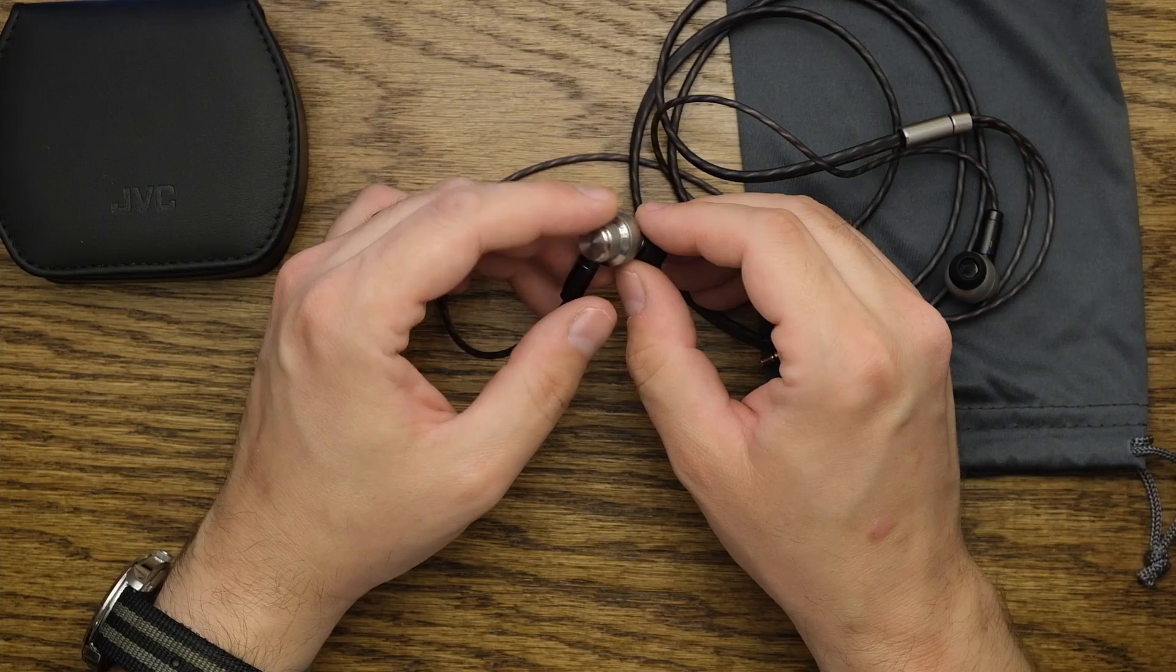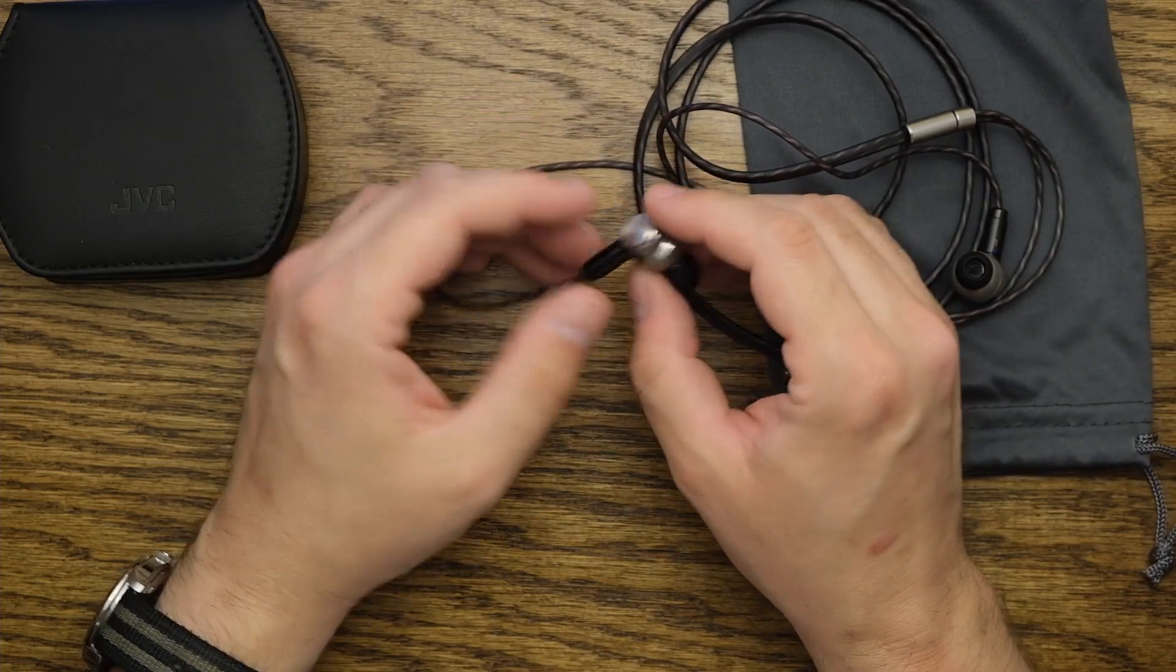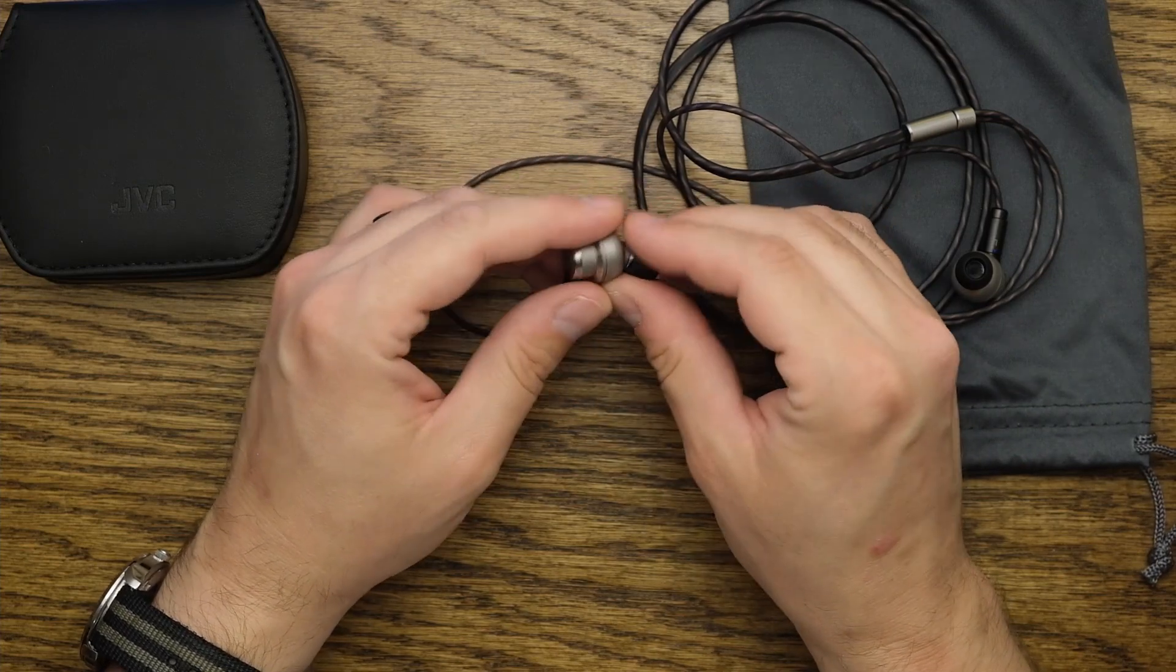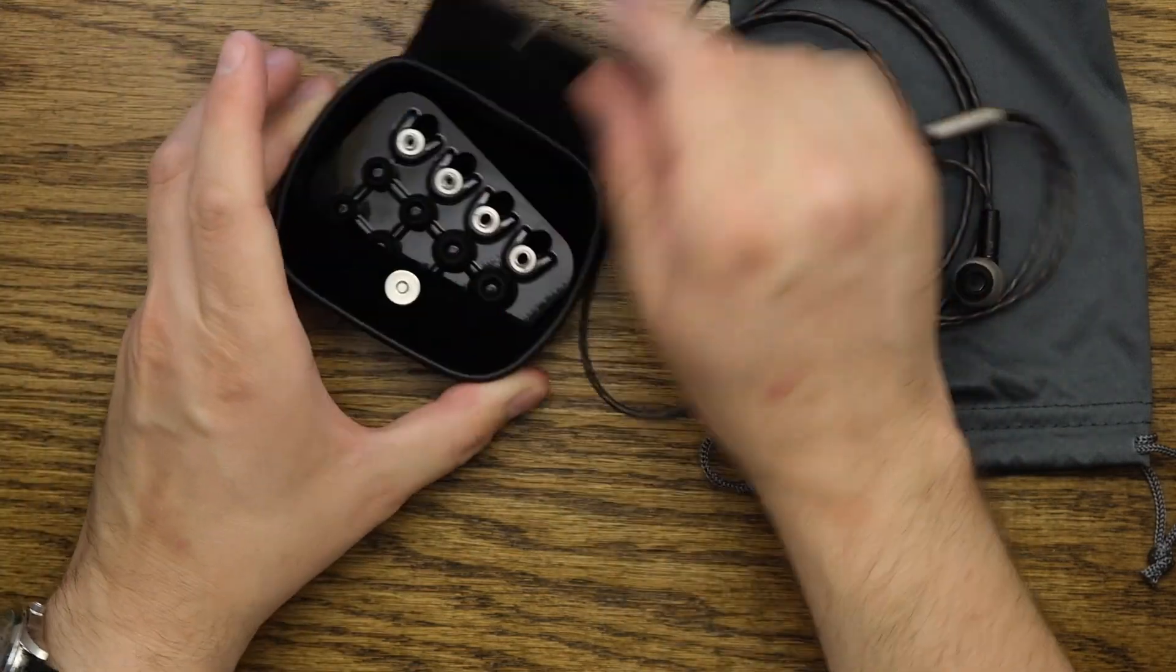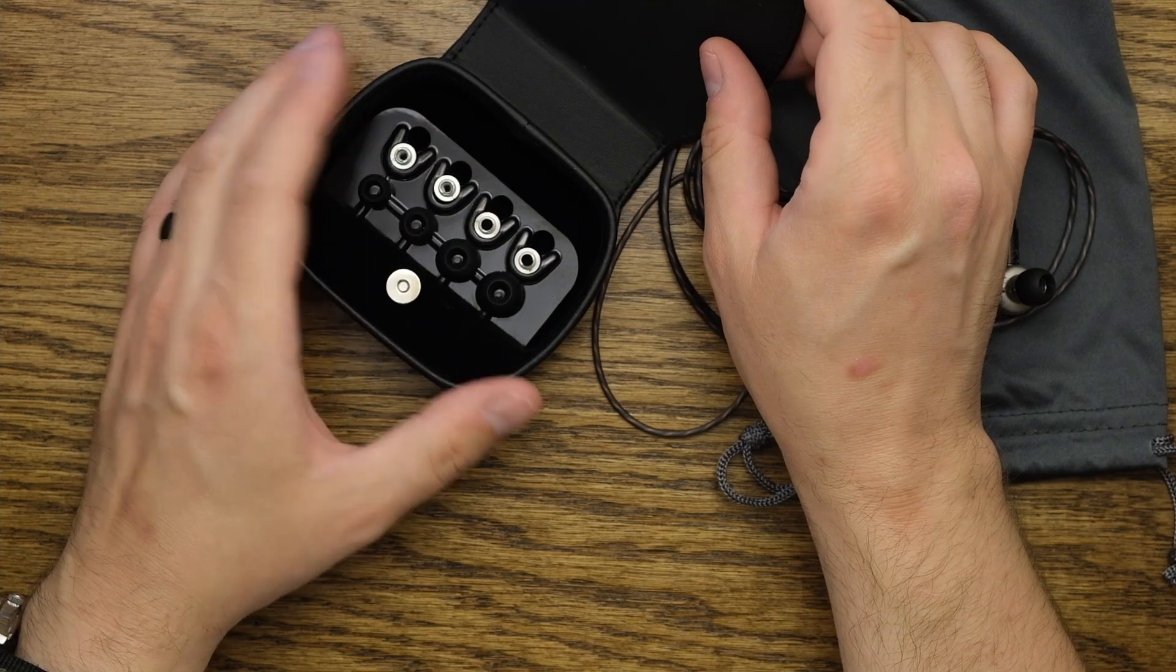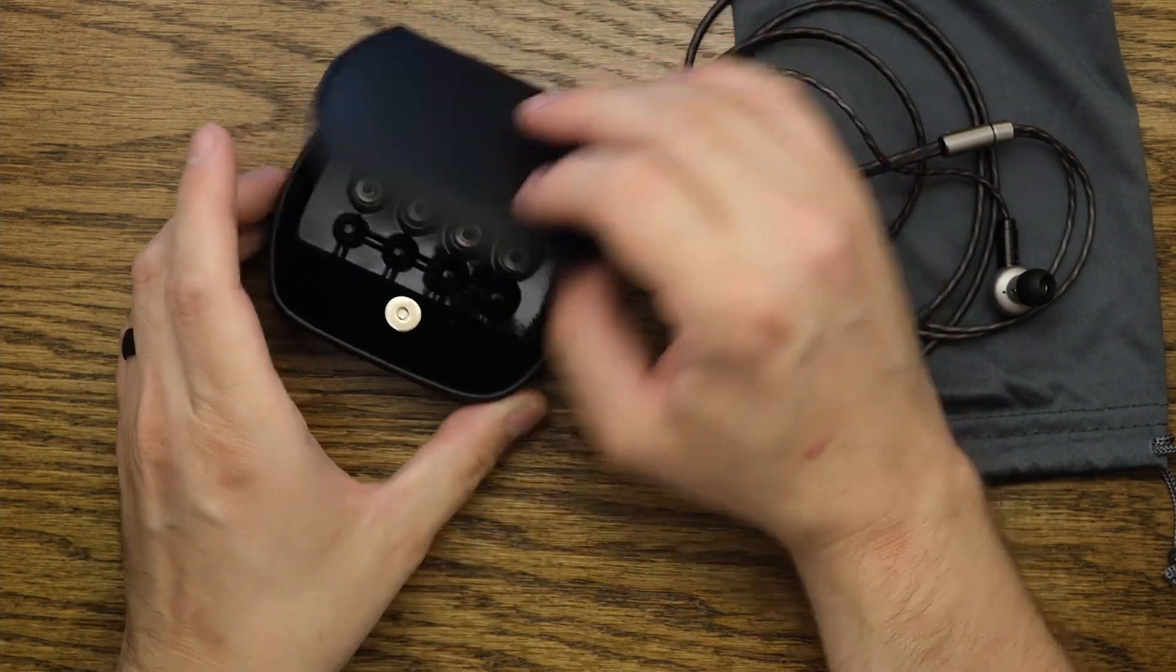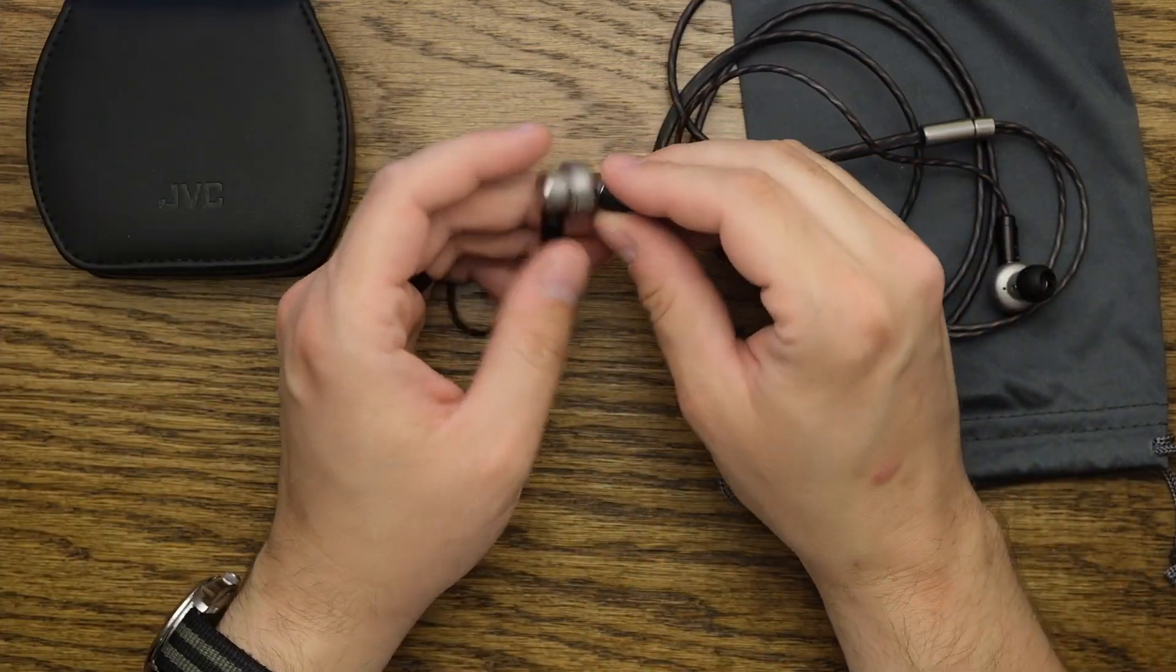In doing so, they made one of the most neutral single dynamic driver earphones really out there for the price especially. So Dropper and JVC teamed up and they manufactured a set of filters that essentially give you that same response as the ones that the community had developed. And now they're just manufactured filters, so it's a nice professional way to have that same sound and be more consistent about it.